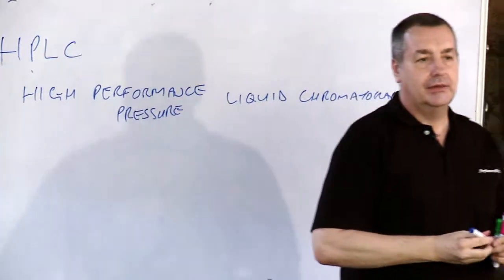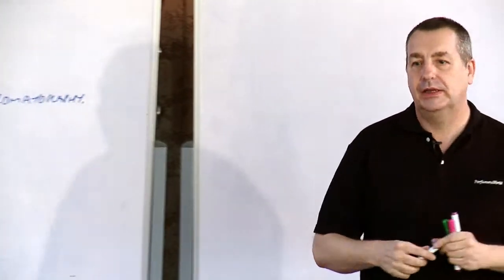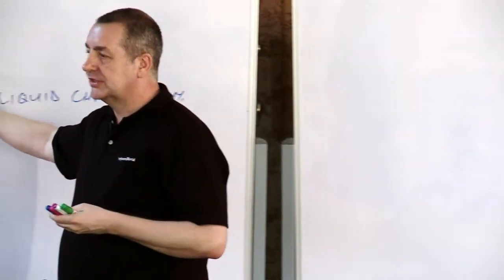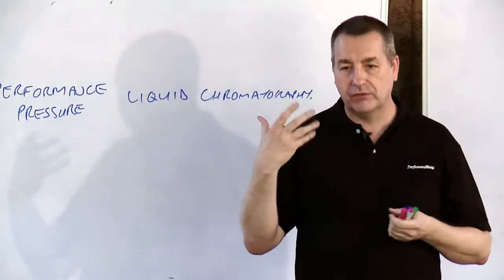So GC, gas chromatography, is for volatile compounds, things that evaporate. The HPLC is for separating mixtures that are non-volatile.